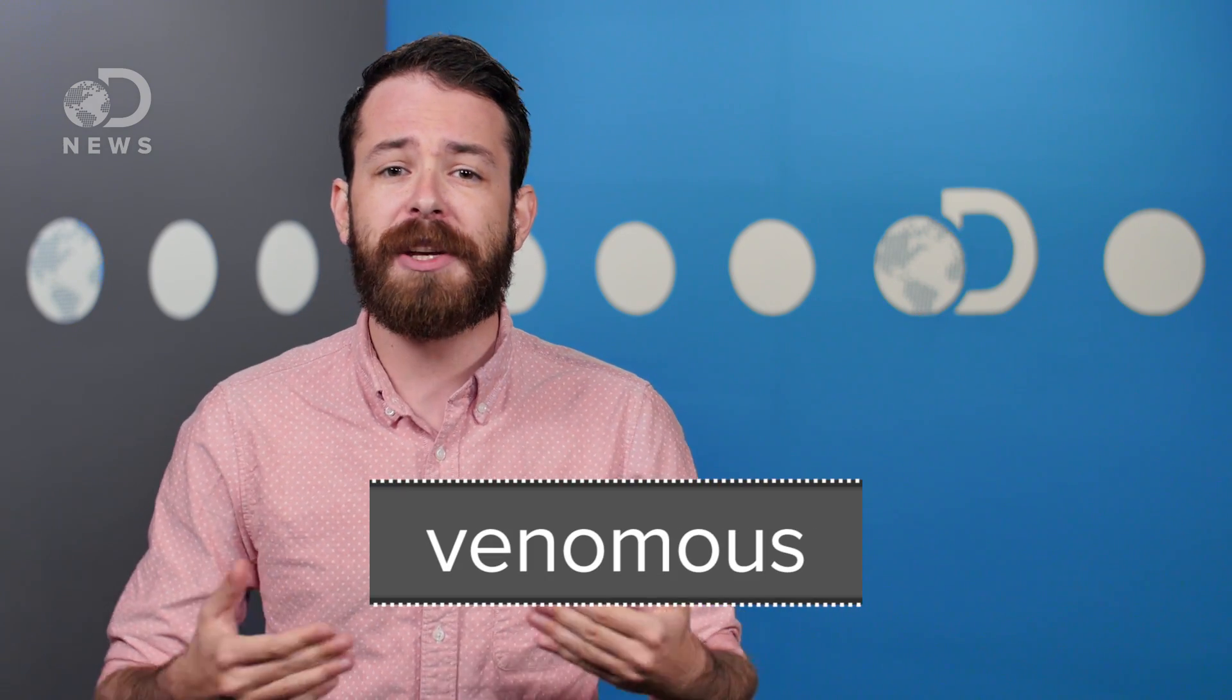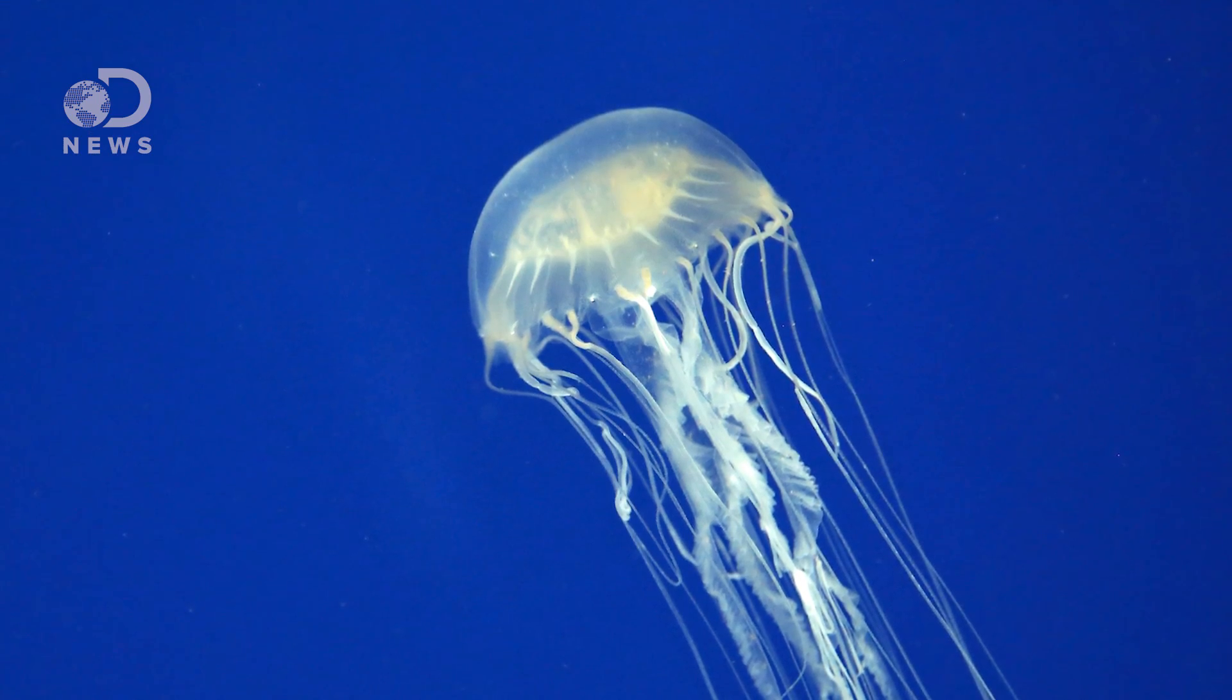All of these animals are considered venomous, which means that they carry a toxin that can be injected to produce a harmful response in another animal. It's important to note that although some venomous animals can be deadly, like the box jellyfish, a huge number of venomous animals pose little to no risk to humans.